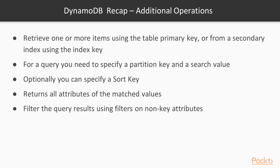Additional DynamoDB operations include BatchGetItem, which retrieves a maximum of 100 items or 16 megabytes from the table. BatchWriteItem supports a maximum of 25 put or delete item requests, up to 16 megabytes. The DescribeLimits API is used to obtain the current account limits on provisioned capacity for a region.